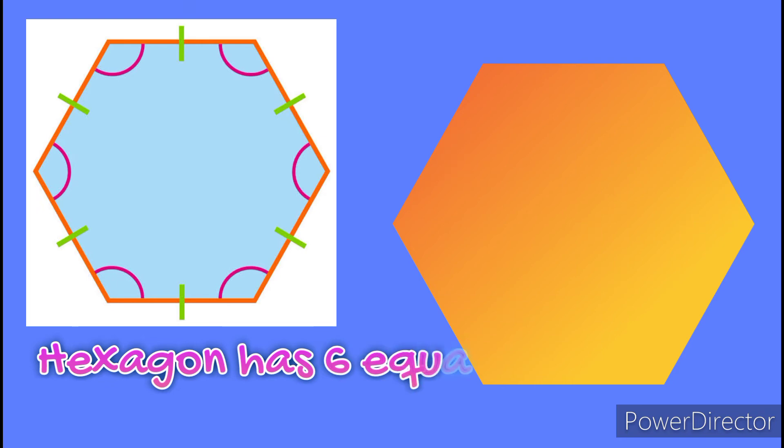Hexagon. Hexagon is also one of the regular polygons and it has six equal sides. Count: one, two, three, four, five, and six. Hexagon is a closed two-dimensional shape.